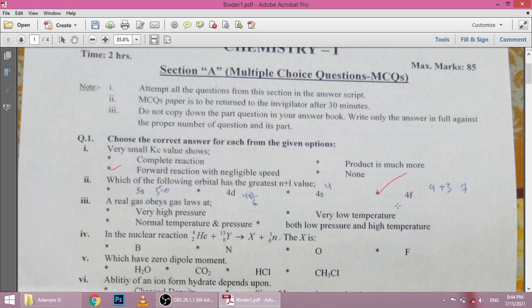Third is real gas. Real gas law says that real gas follows gas law in normal pressure and temperature. Fourth is in the nuclear reaction, X plus N, then X is dash. So here 6 plus 2 is 8, which is oxygen.